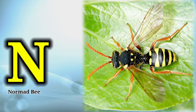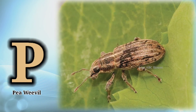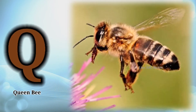N is for Nermat B. O is for Oakline. P is for Pink River. Q is for Queen Bee.